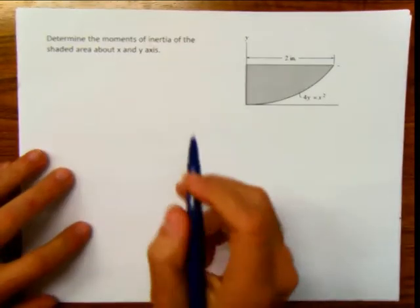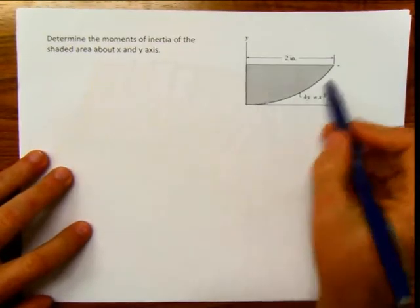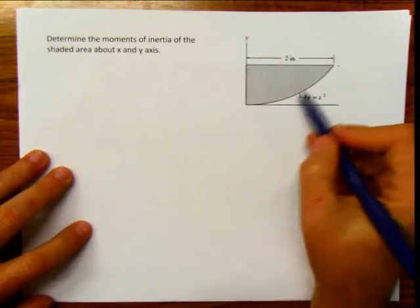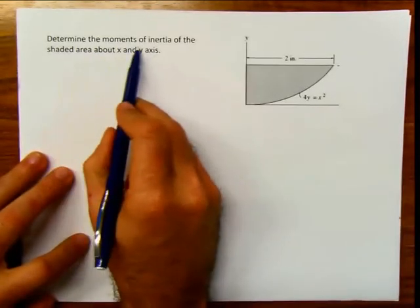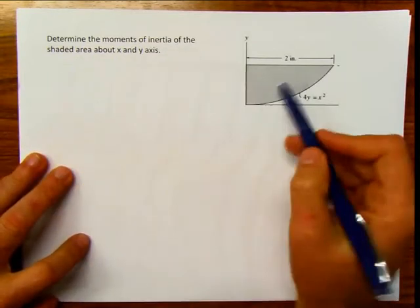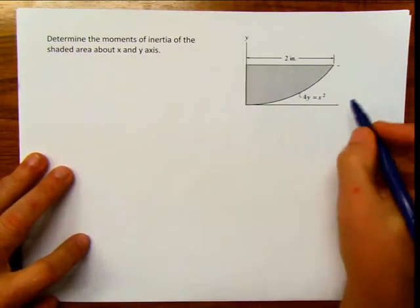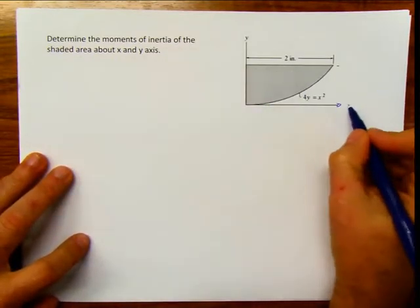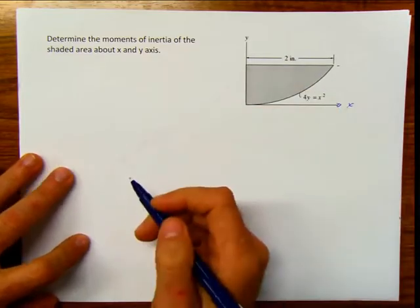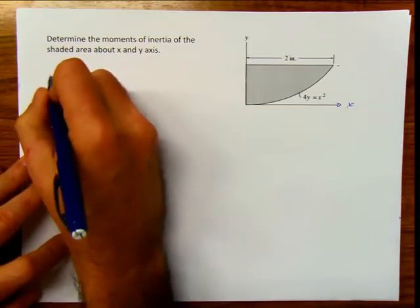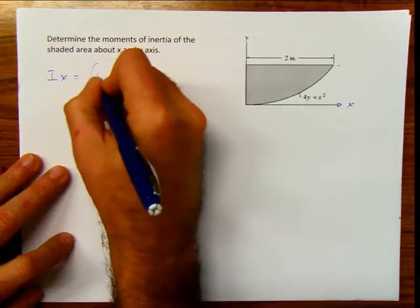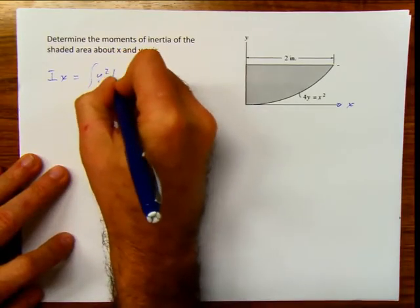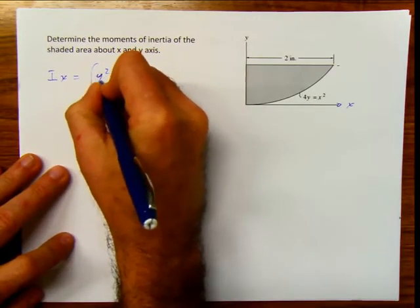The first one — we have this equation for y equals x squared. It says: determine the moments of inertia of the shaded area about the x-axis and the y-axis. Remember the equation for moment of inertia: moment of inertia is the integral of y squared dA, if it's I sub x.